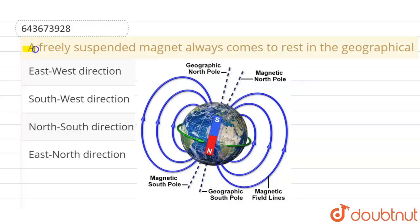this question, the given question is: a freely suspended magnet always comes to rest in the geographical... and the given options are east-west direction, south-west direction, north-south direction, or east-north direction. Okay, so if you can see in